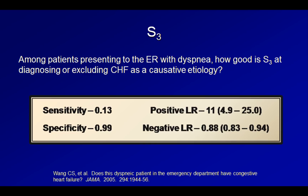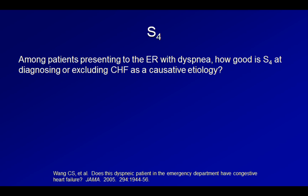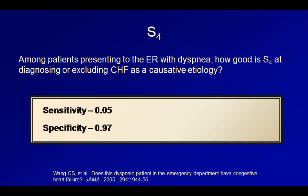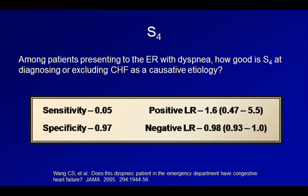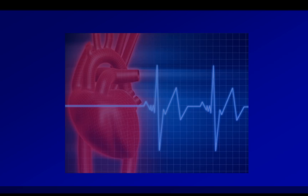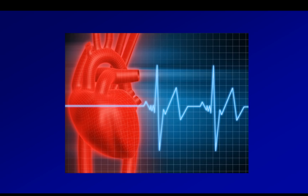How about an S4? How good is that at diagnosing or excluding CHF as a causative etiology of dyspnea? The sensitivity was a dismal 5% and the specificity was 97%. This translates to a positive likelihood ratio of 1.6 and a negative likelihood ratio of 0.98, neither of which were statistically significant. Therefore, the presence or absence of an S4 is not helpful at diagnosing or excluding CHF. Unfortunately, there is no additional significant and relevant evidence in the scientific literature that discusses the diagnostic utility of abnormalities of the heart sounds. This does not mean that an understanding and the ability to recognize these abnormalities are of no utility. However, what it does mean is that we should be cautious about the over-utilization or over-reliance on these exam findings.